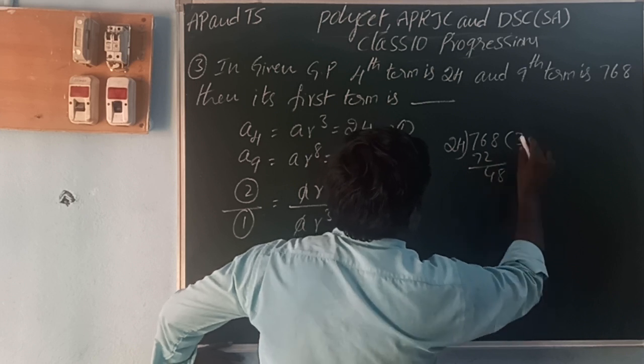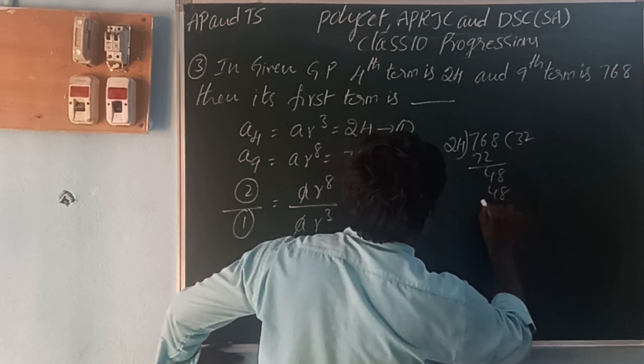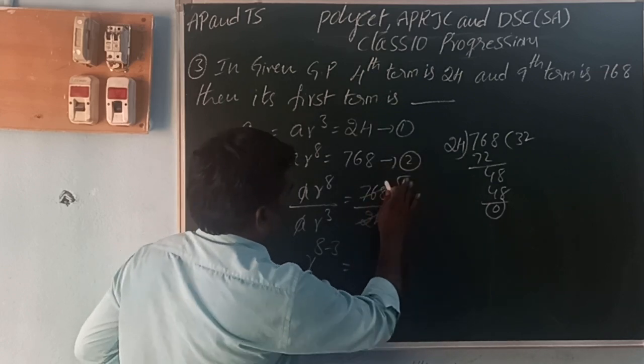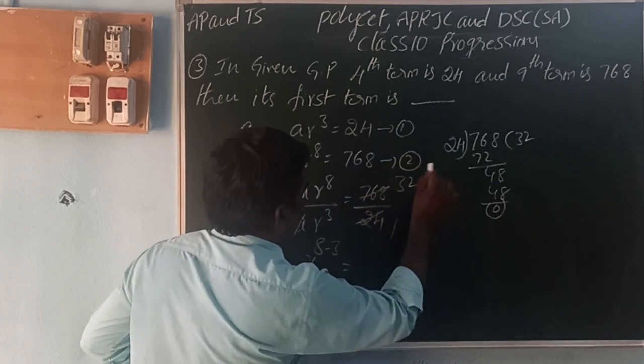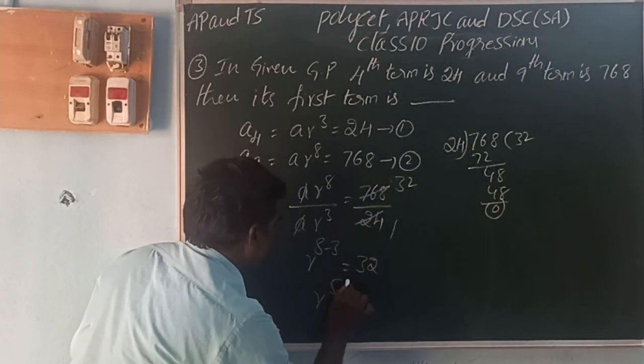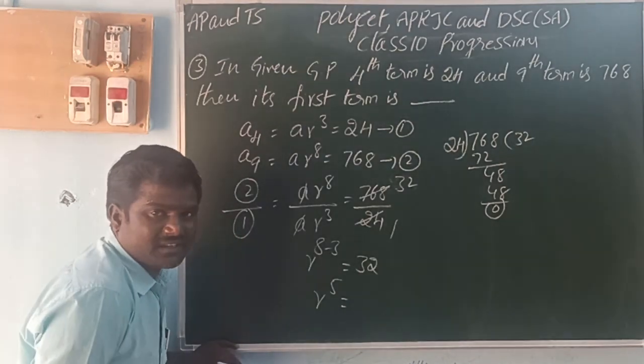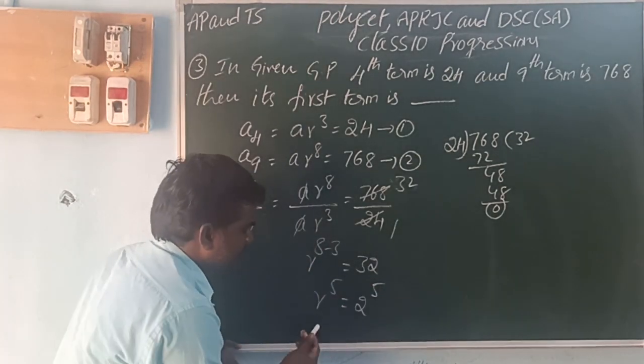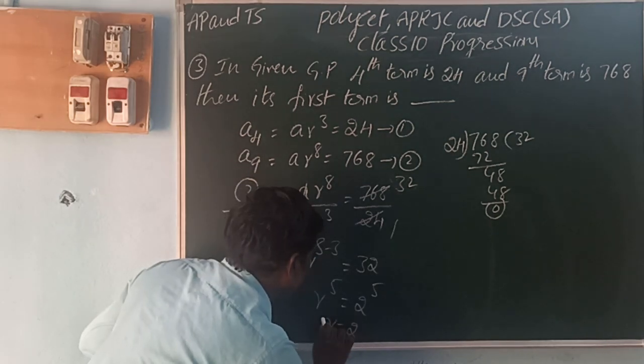24 into 2 is 48, 24 into 1 is 24. That's 5, so 32. R^(8-3) = R^5 = 32. 2^5 = 32. Powers are equal, base also equal. R = 2.